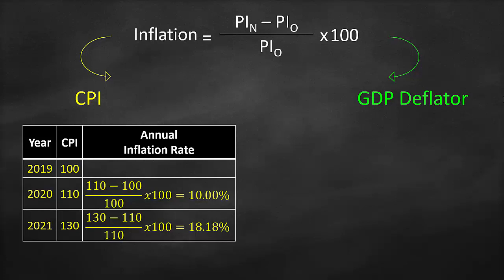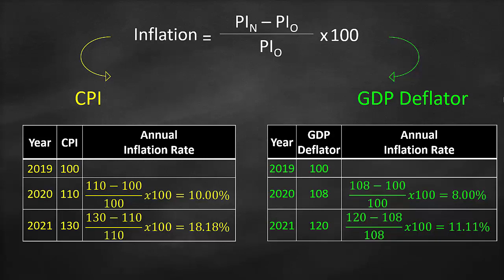Now let's look at a numerical example using the GDP deflator. We have three years with GDP deflator values of 100 for 2019, 108 for 2020, and 120 for 2021. For 2020, inflation equals (108 − 100) / 100 × 100 = 8%. For 2021, inflation equals (120 − 108) / 108 × 100 = 11.11%.